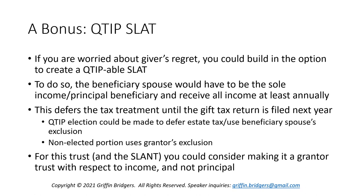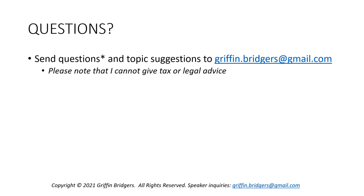For the Q-TIP SLAT and the SLANT, in the wake of grantor trust reform you could also consider making each a grantor trust only with respect to income and not principal. For example, with the SLANT, you could say the spouse has the power to receive all income but never has the power to receive principal. Instead, the principal could go to children and descendants, which might limit some of the exposure under grantor trust reform proposals — especially for any funding to a SLANT that might take place in the future after that reform is enacted, if indeed it is.